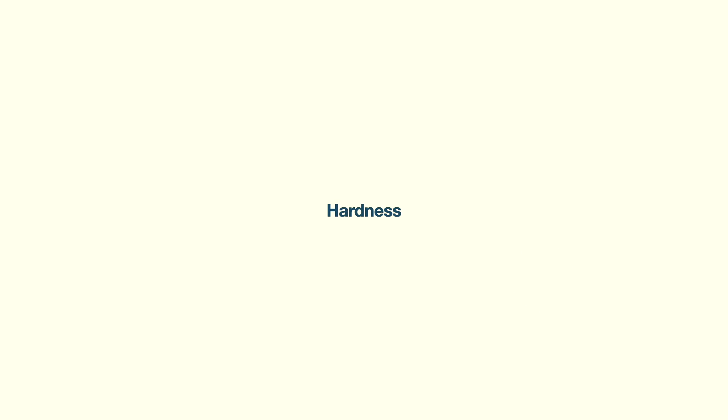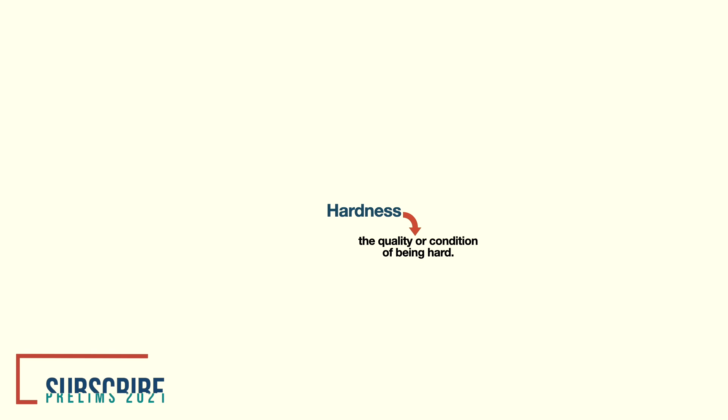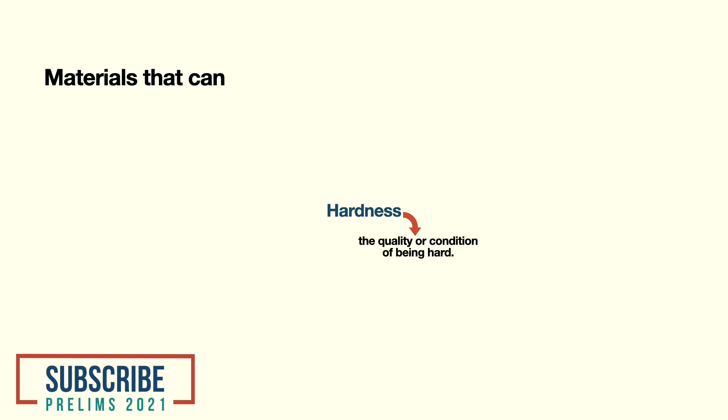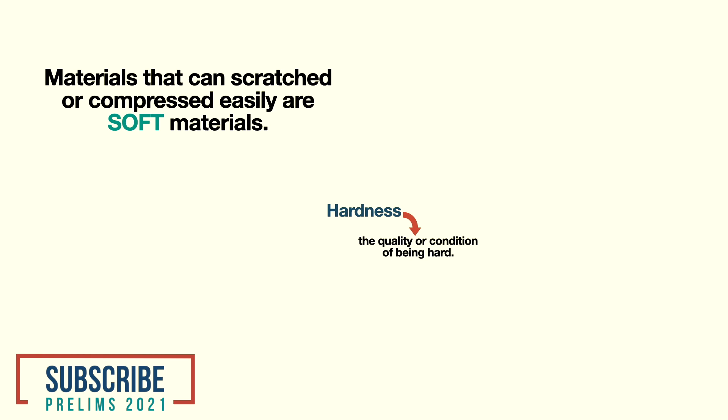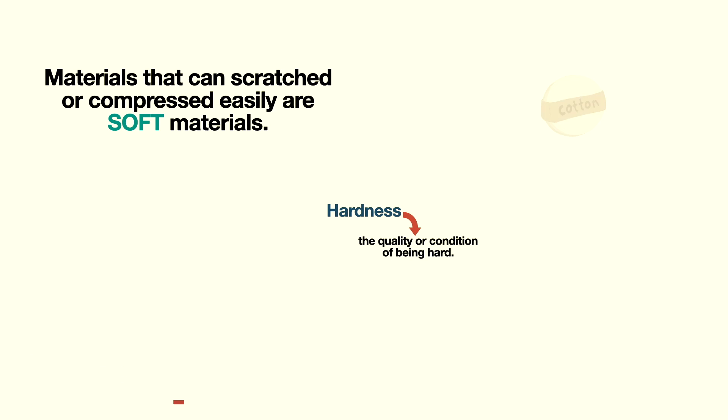The next property is hardness. This is about the strength of materials. Different materials have different strengths. Soft materials can easily be scratched or compressed — for example, cotton.